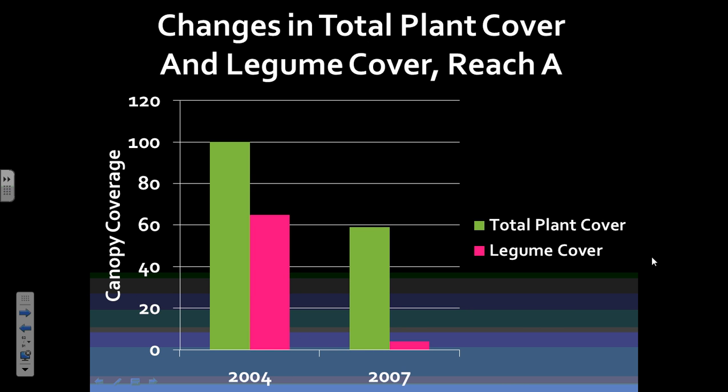Going all the way back to Reach A — the very top — plant cover declined and now it's only two data points. Somebody could say that's worthless and I wouldn't argue, but that's a pretty big difference — it's almost down to zero. There's certainly a questionable aspect to this.